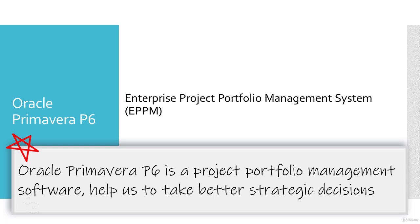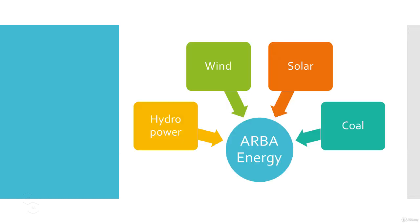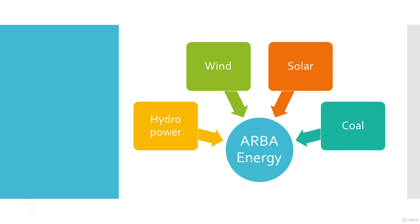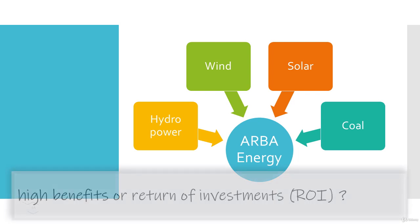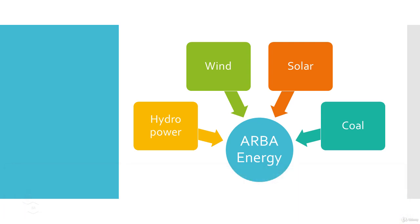Let's take an example of an energy organization called Arba Energy, which offers its services in different energy sectors such as hydropower, wind energy, solar, and coal. The Arba Energy investment portfolio consists of energy projects in these sectors. Making strategic decisions — which of these projects have high benefits or ROI, which ones to assign more resources to, and which ones to stop — requires seeing the bigger picture. That's why we group projects into a portfolio.